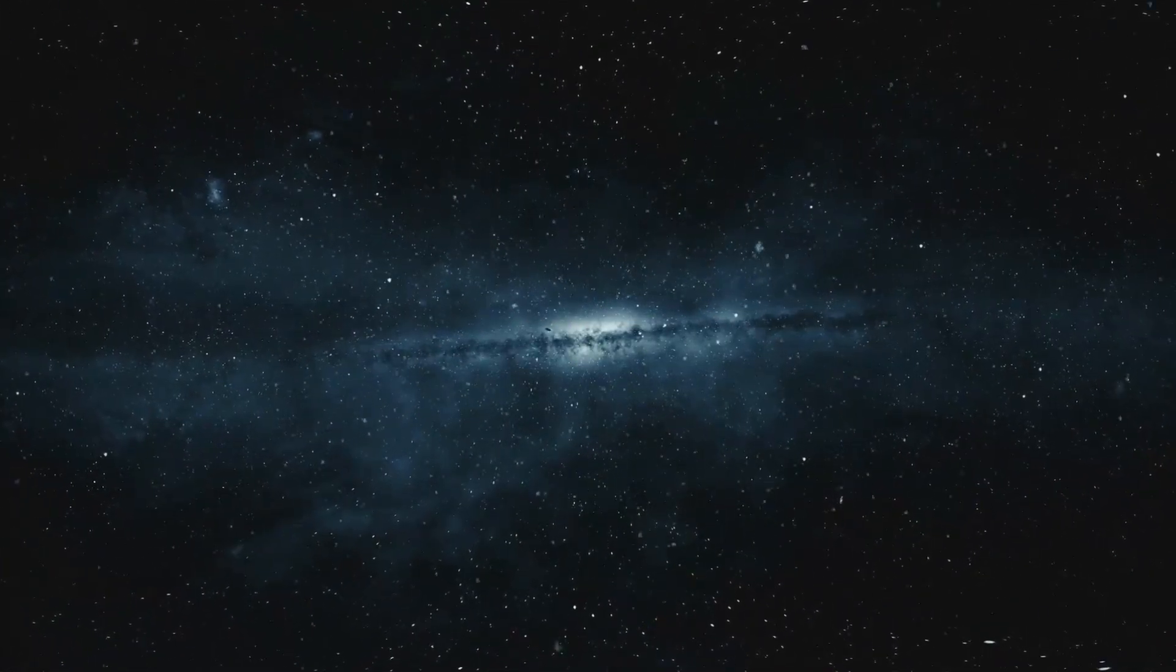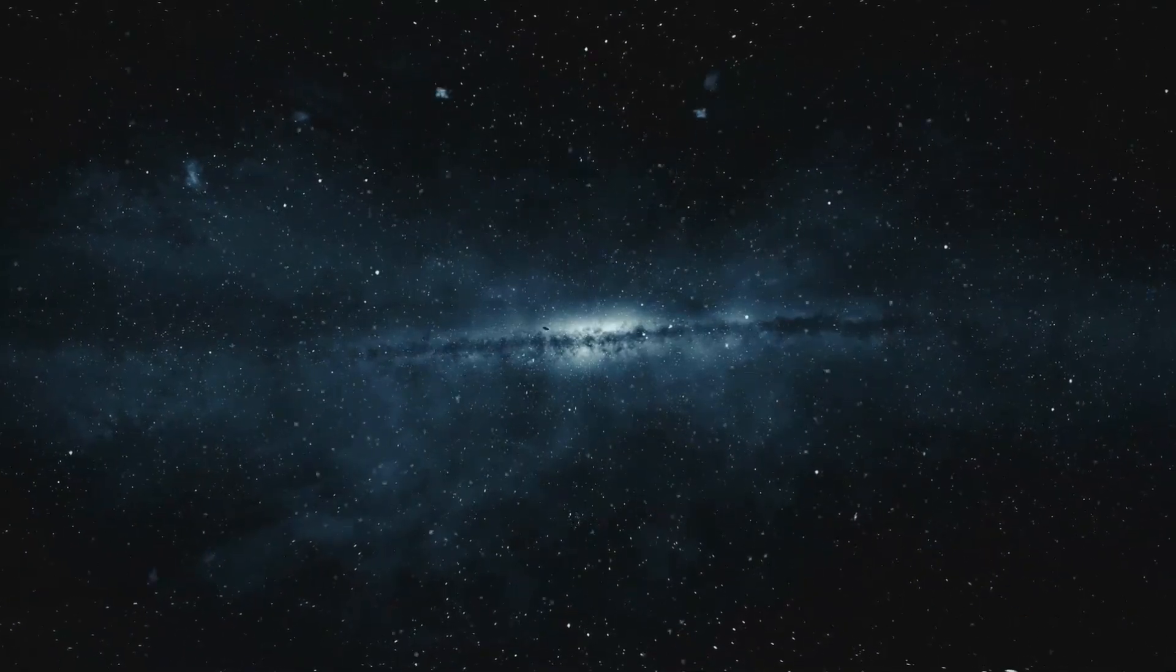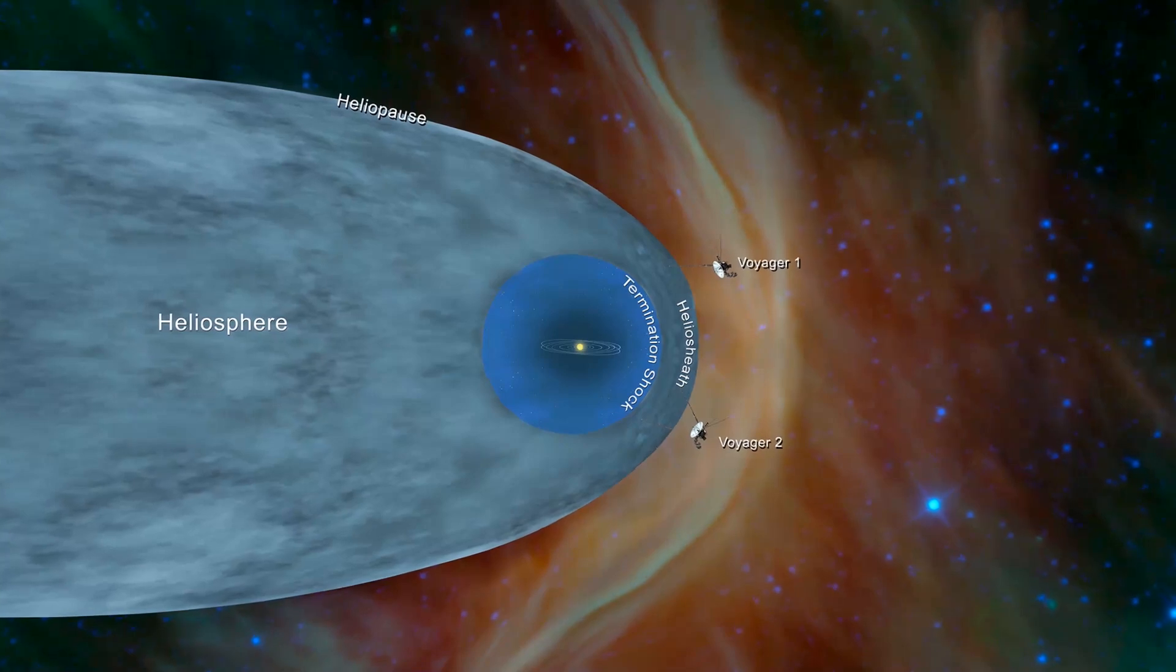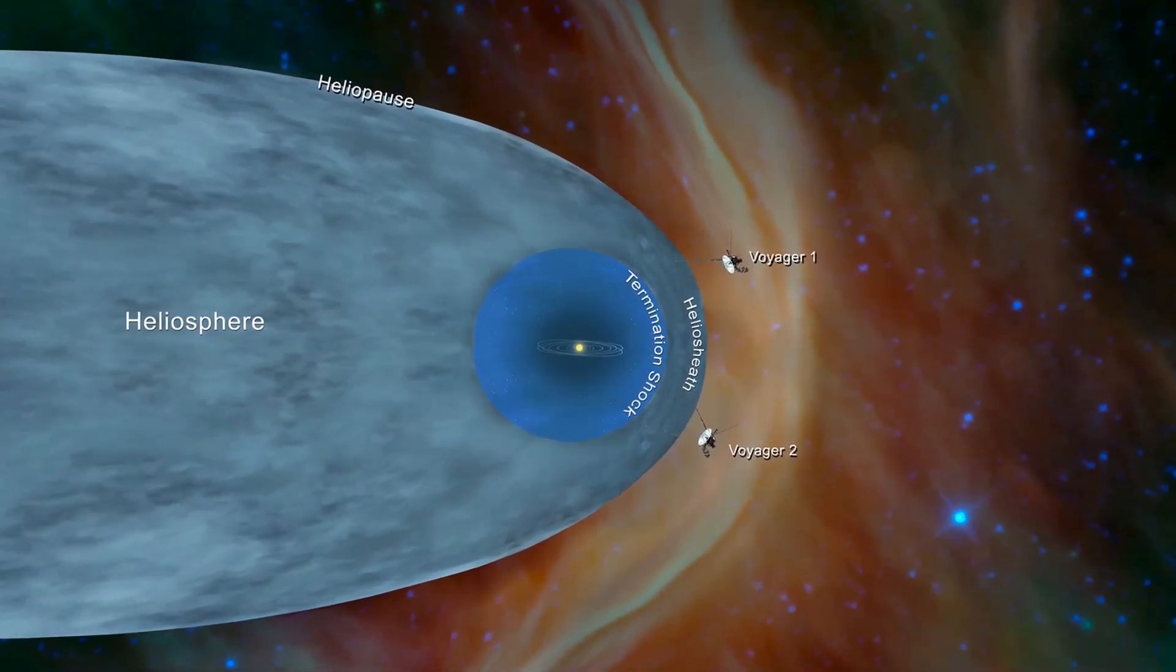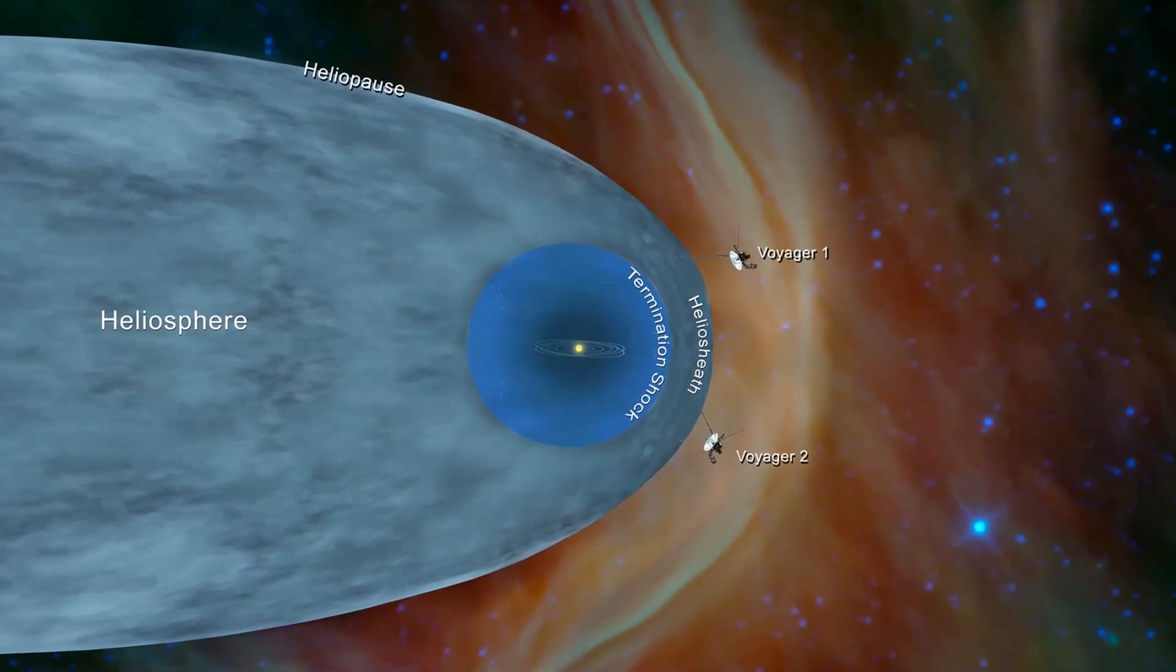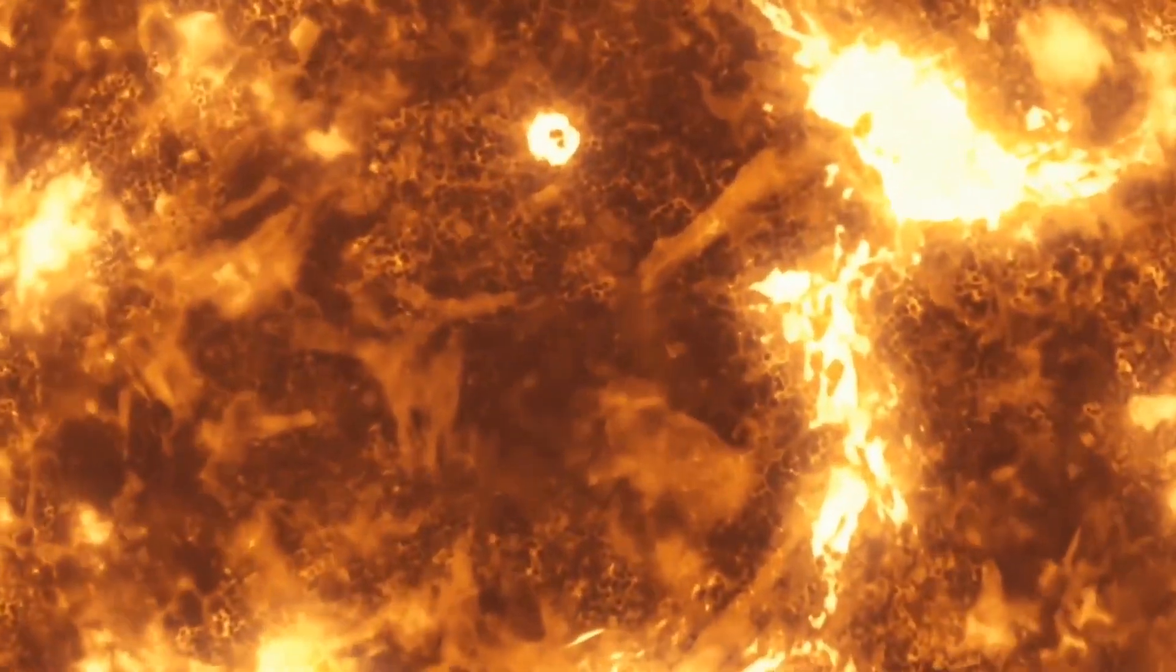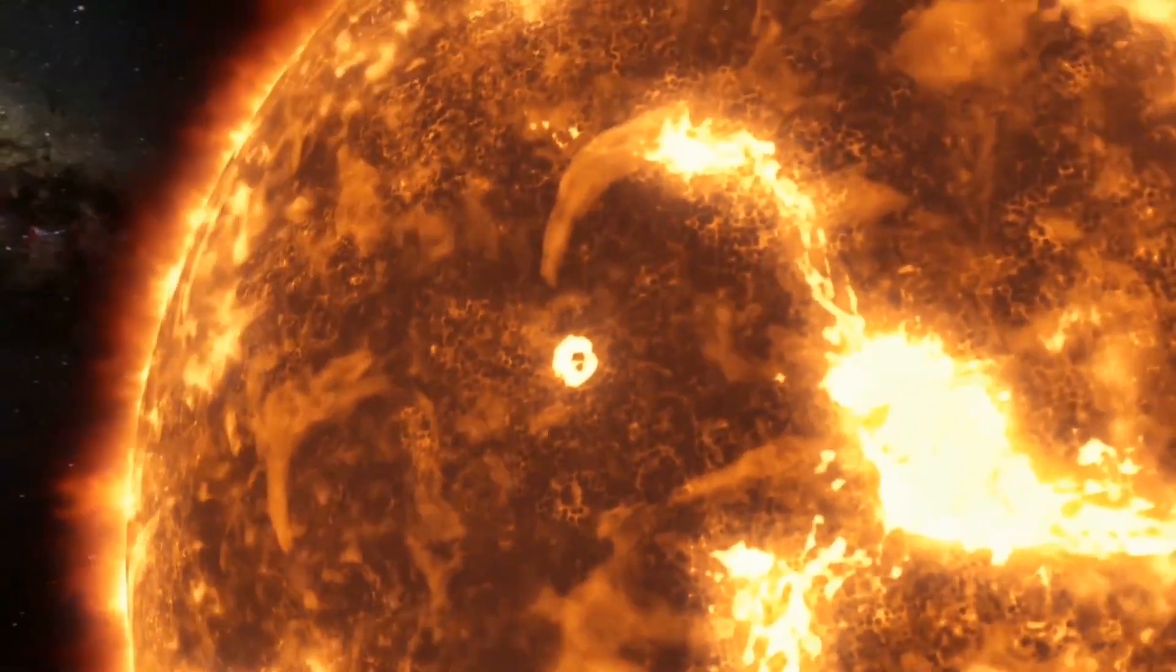Four years ago, the Voyager 2 probe became just the second human-made object in history to exit the solar system and officially enter interstellar space. On November 5th, 2018, the craft officially left the solar system as it crossed the Heliopause, the boundary that marks the end of the heliosphere and the beginning of interstellar space. This area is the outermost region of the solar system, sometimes referred to as the bubble, and is located around 119 astronomical units from the sun.